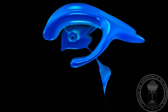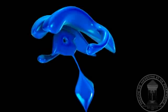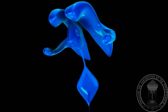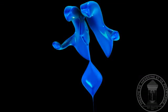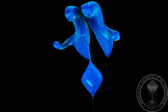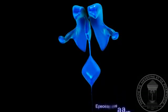The ventricular system consists of four ventricles connected by many channels. It is connected to the central canal of the spinal cord.